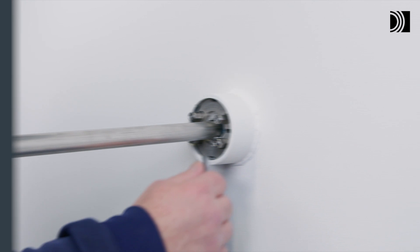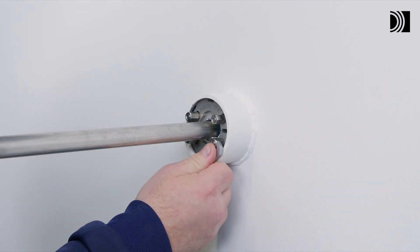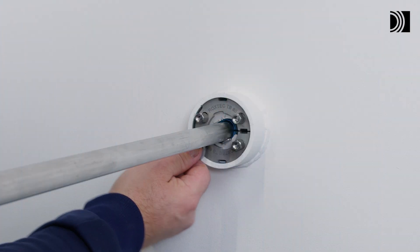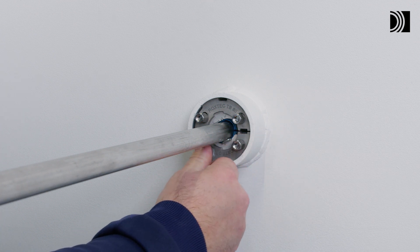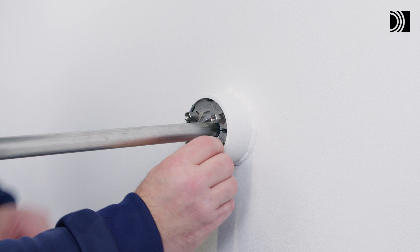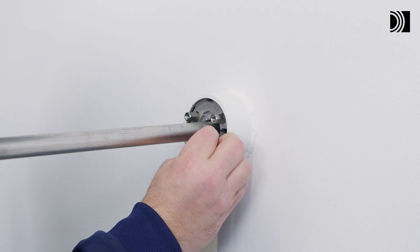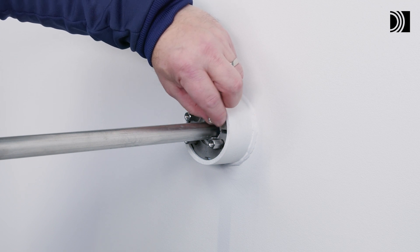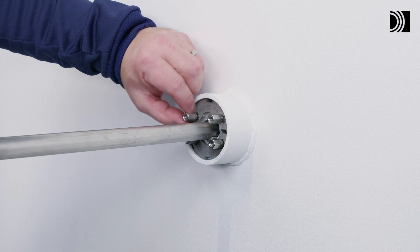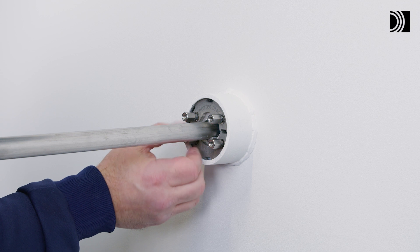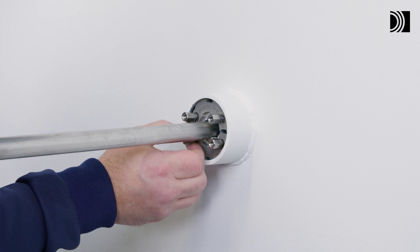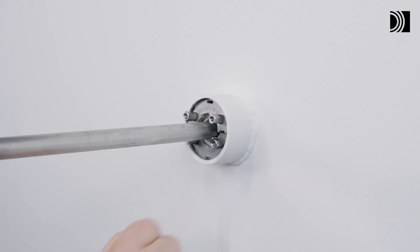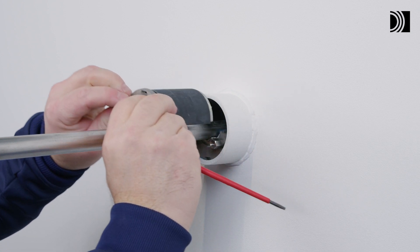Disassembly. Untighten the nuts crosswise in small steps. Unscrew the nuts. Angle the fitting by using a flat tool. Push it towards the center. Remove the seal halves.